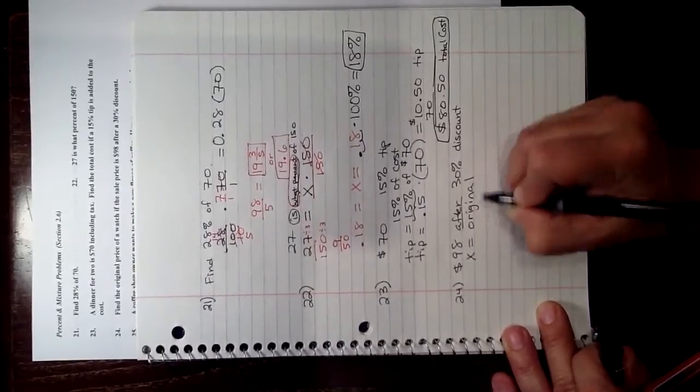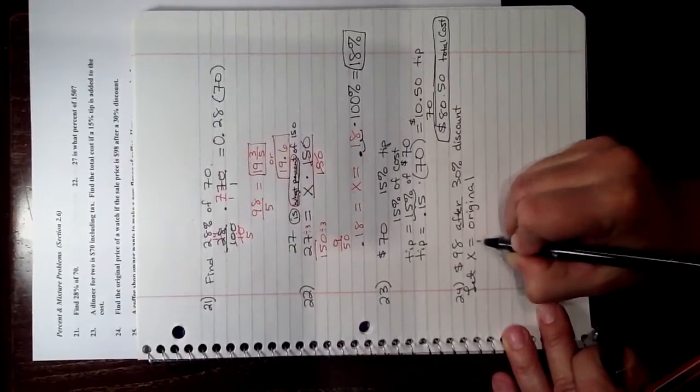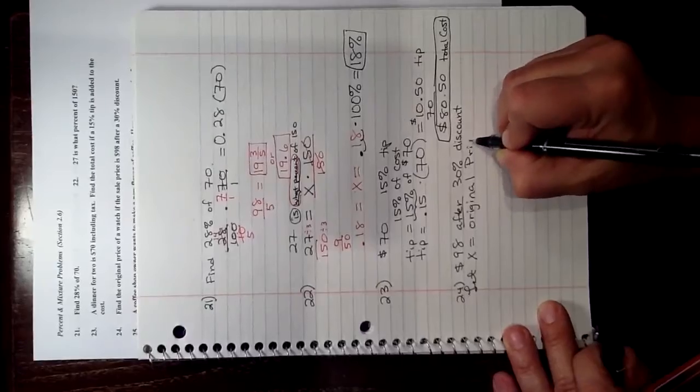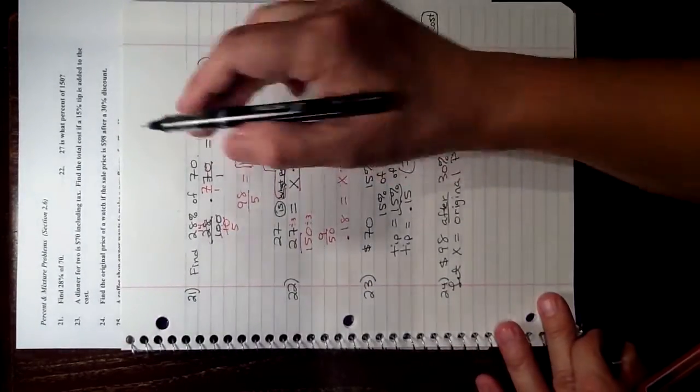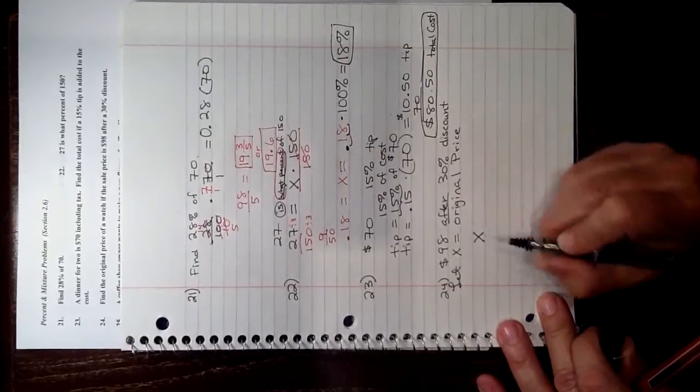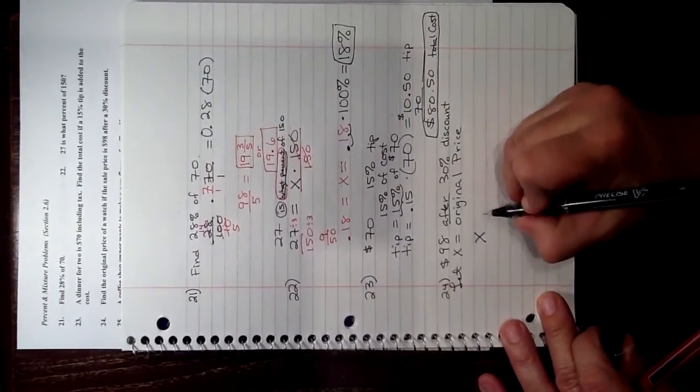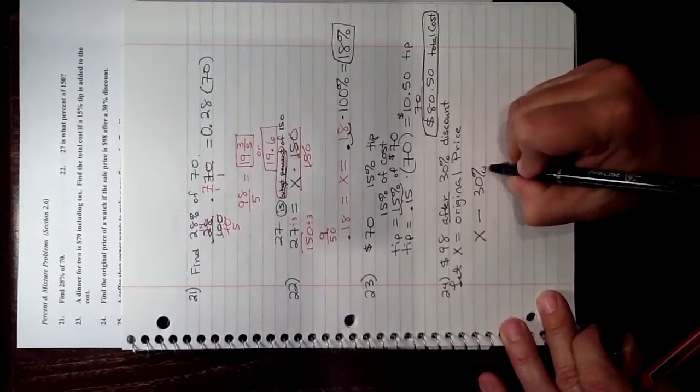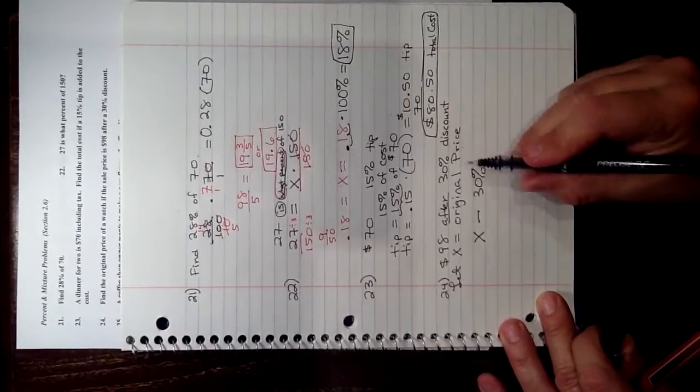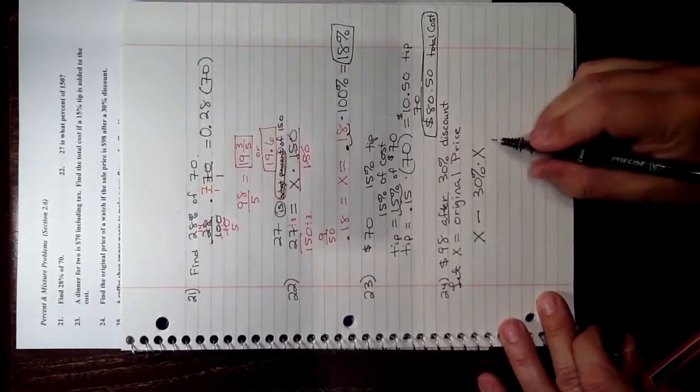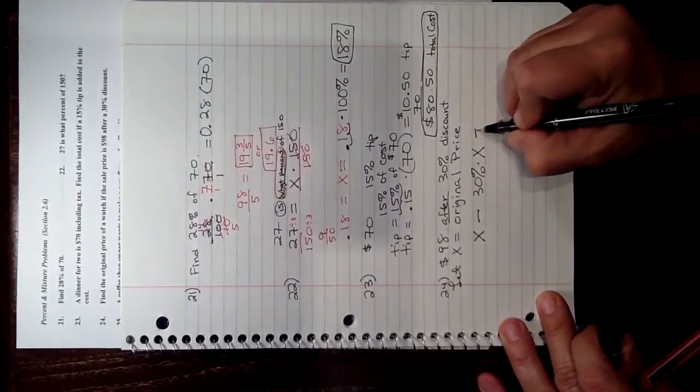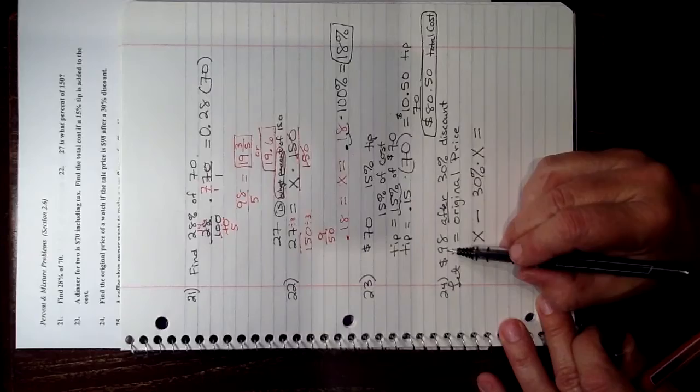So if we let X equal the original price of a watch, if you think about that, the watch started off as X dollars. We take off 30%, if it's a percent, you have to take 30% of the original price to take that off, and then that will equal the sale price.